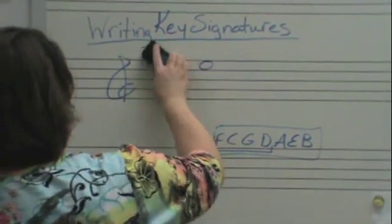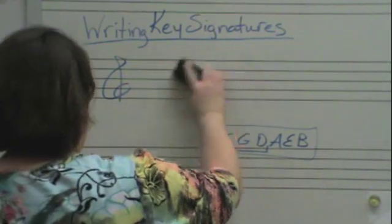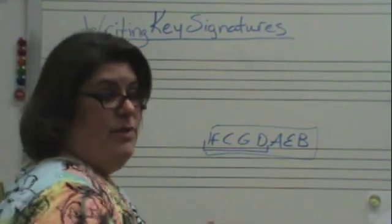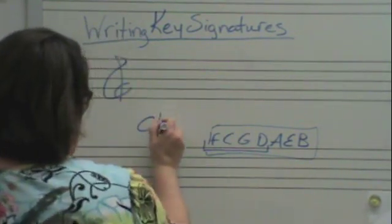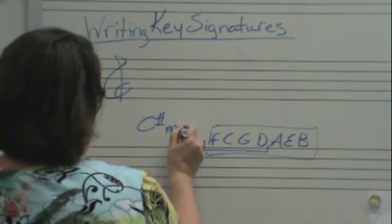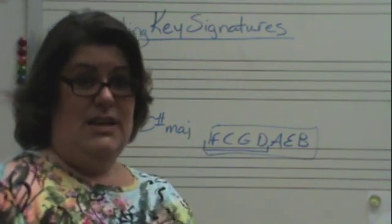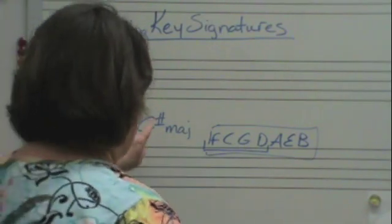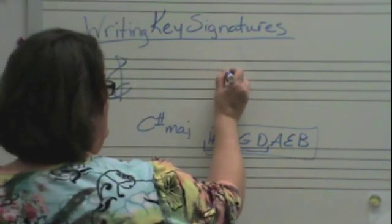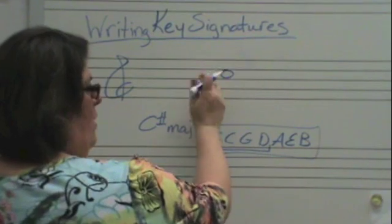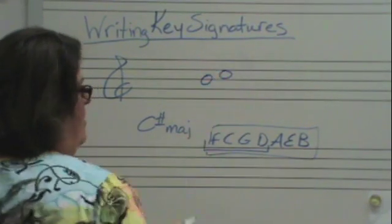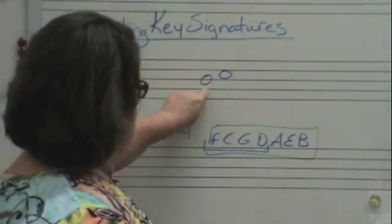One more. If I'm doing theory and it asks for this key. Now I can either do it the way we just did, which is put a C up here, go backwards to ti. Ti is the note B.